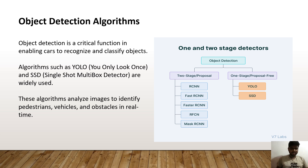Object detection algorithms. Object detection is a critical function enabling cars to recognize and classify objects. Algorithms such as YOLO and SSD are widely used. These algorithms analyze images to identify pedestrians, vehicles and obstacles in real time. Object detectors are categorized as two-stage and one-stage detectors.